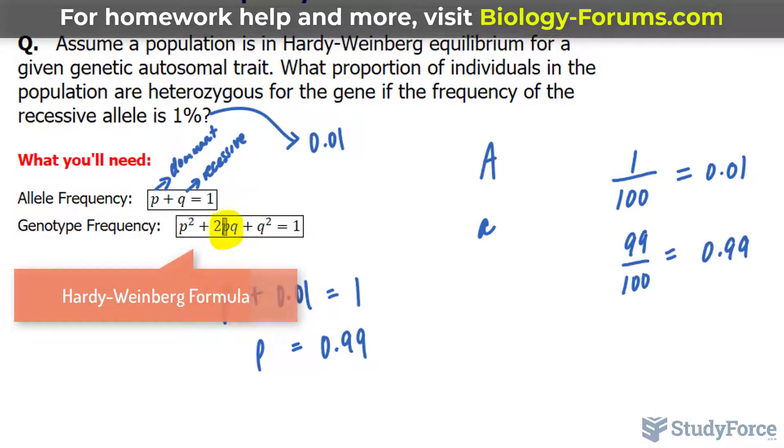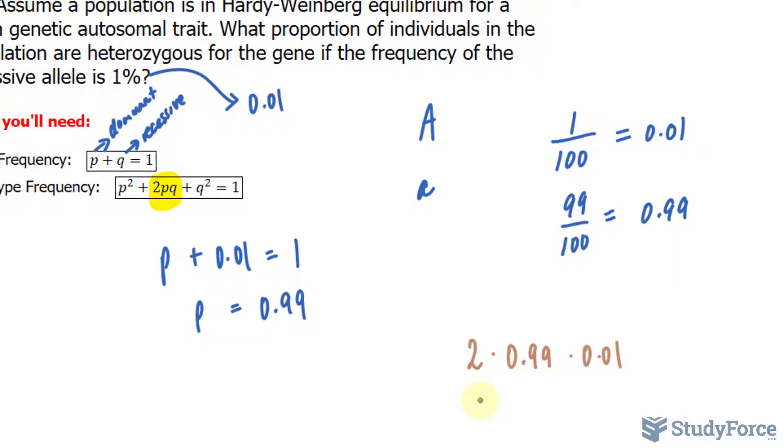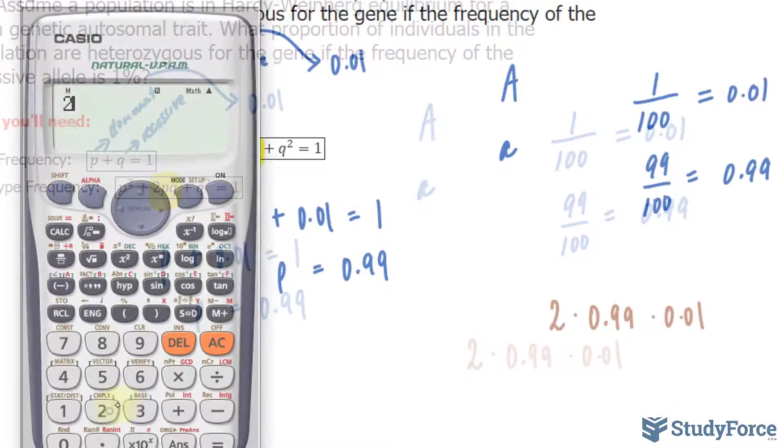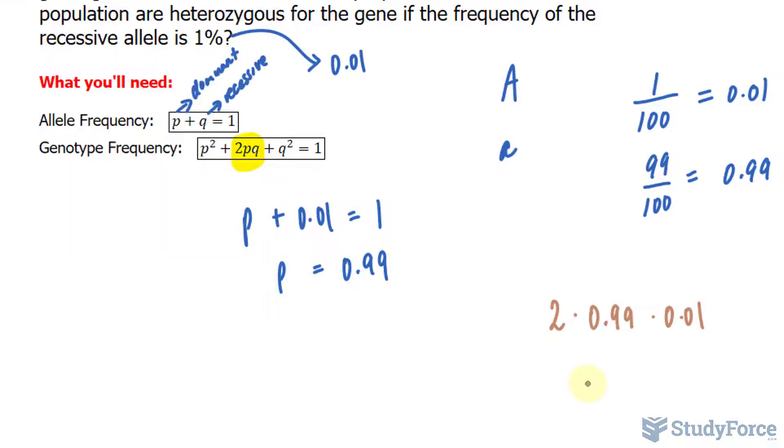So we'll take 2, multiply it to P, 0.99, and multiply that to 0.01. This value should give us the proportion of individuals that are heterozygous for this gene. So 2 times 0.99 times 0.01 gives us 0.0198.